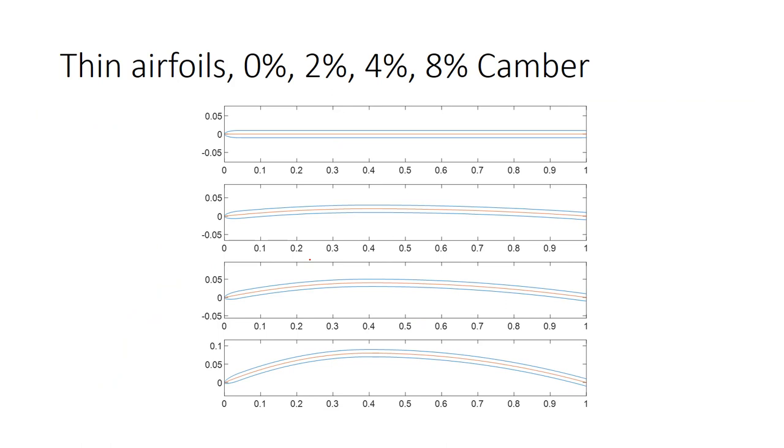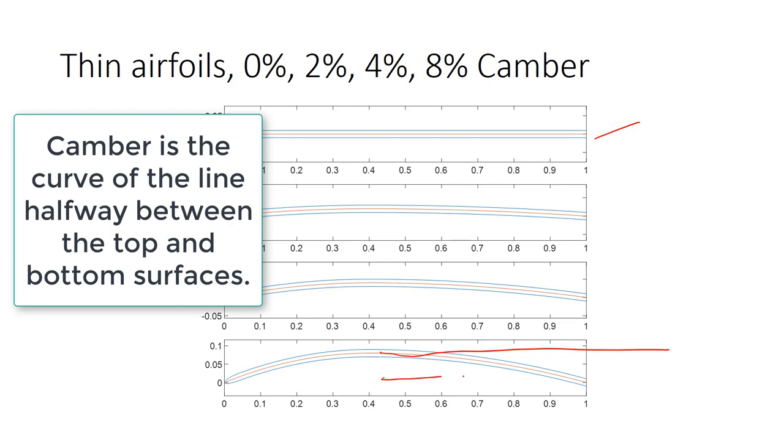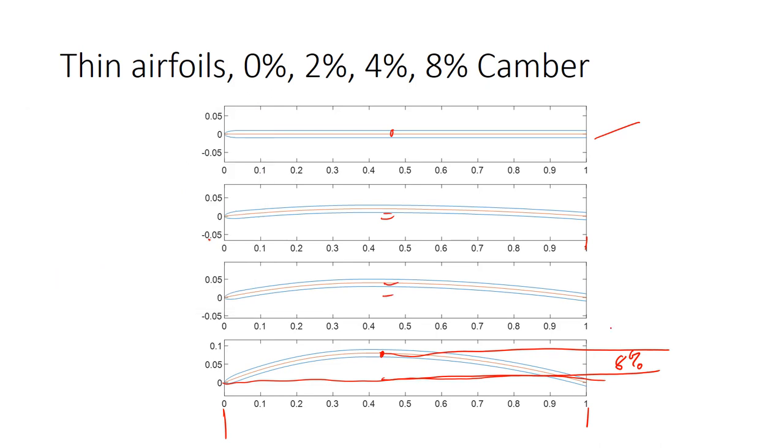So what happens when we put camber in it? This is our flat plate with zero percent. And I should be clear what camber is. Camber is if we were to take this distance here from the straight line of the chord to the highest point in that curve, that distance is eight percent in this case of the total chord length. So here the distance is zero percent, two percent of the chord, four percent of the chord, and eight percent of the chord. So we will look at these four airfoils and compare them at a constant angle of attack first. But before we do that, you want to make a guess which one's going to give the most lift.